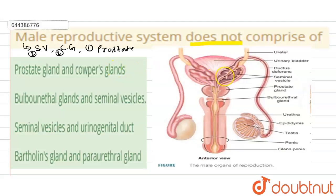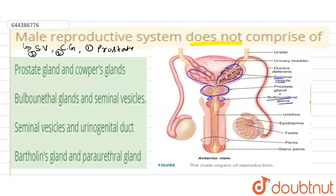In this diagram, I am explaining the location of each gland and duct. Here this one is ductus deferens, that is the vas deferens. This bag-like structure is the seminal vesicle — two seminal vesicles are found, one on each side. Here is the single prostate gland, and here are two bulbourethral glands, also known as Cowper's glands. This one is the urethra, and this opening is the urino-genital opening, and this duct is known as the urino-genital duct.